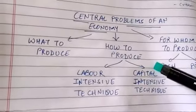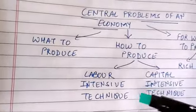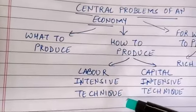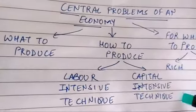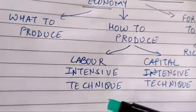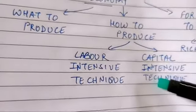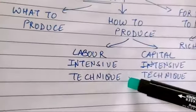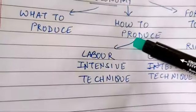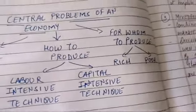The second central problem is 'How to Produce.' This is concerned with the choice of technique of production. There are two techniques: labor-intensive technique, where labor is used more than machines, and capital-intensive technique, where capital is used more than labor. An economy must decide which technique to use in a given industry for efficient production. An efficient technique uses the least amount of resources to provide the same amount of output, meaning production is undertaken at minimum cost.